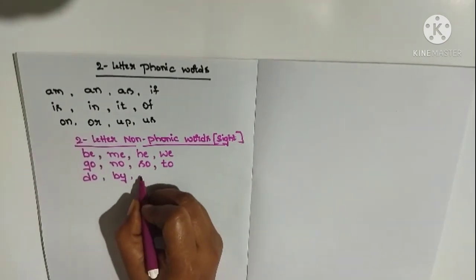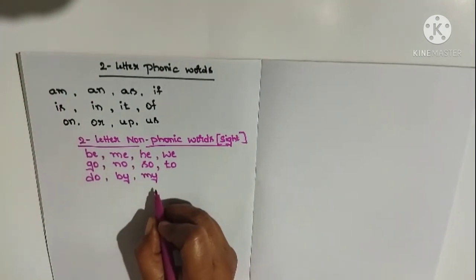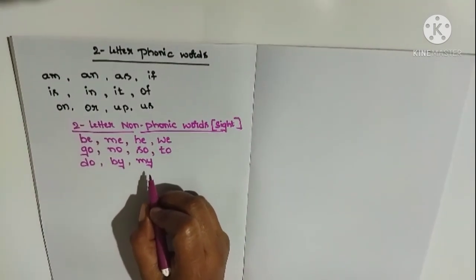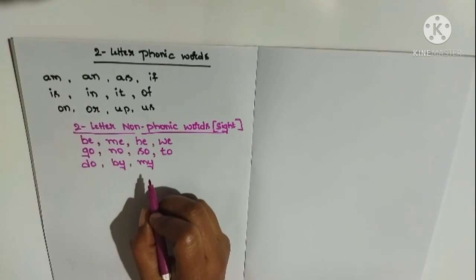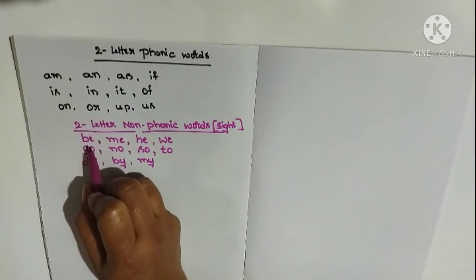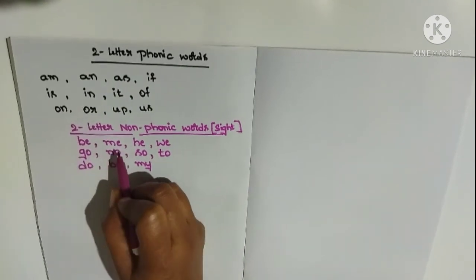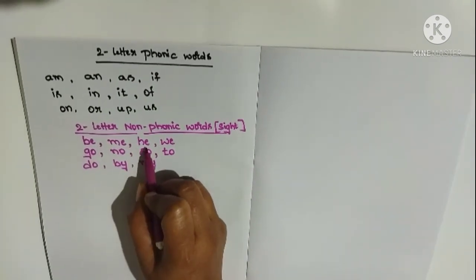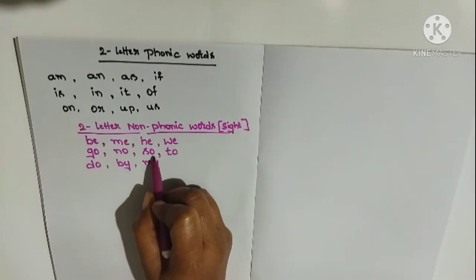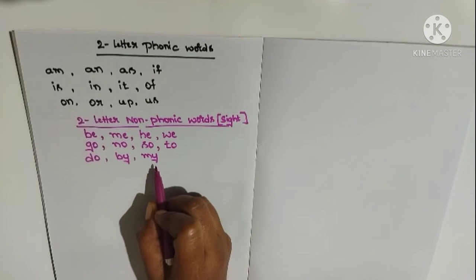By. And. My. So in the non-phonic words or in the sight words, we won't help the child to read the words using the sounds or by the names of the letters. Just we will help the child to read the word by showing it. This is Be. This is me. This is he. This is we. Go. Know. So. To. Do. By. And. My. Still we have so many sight words.